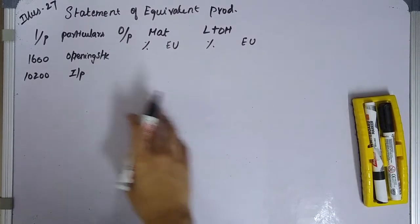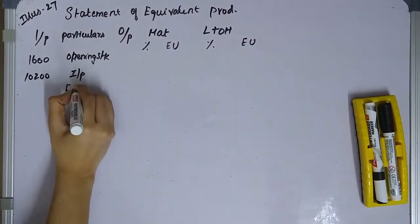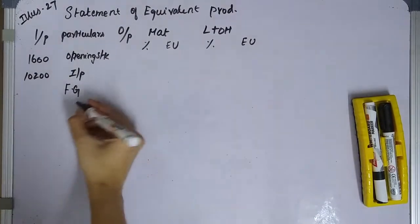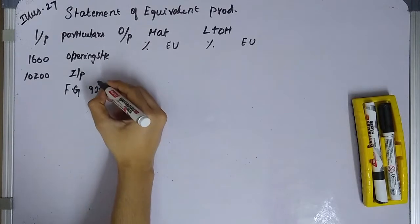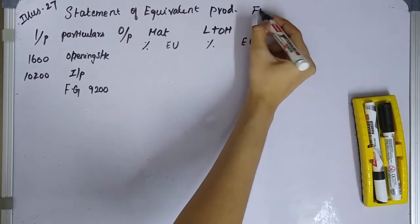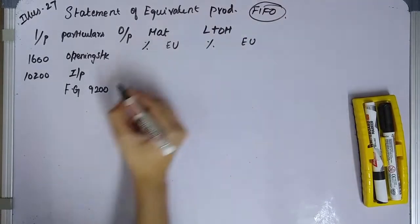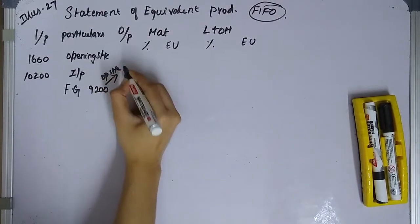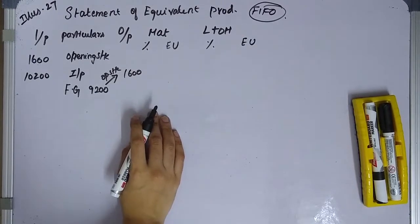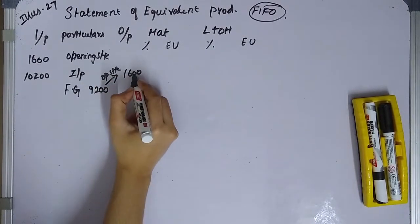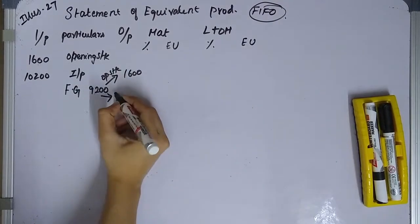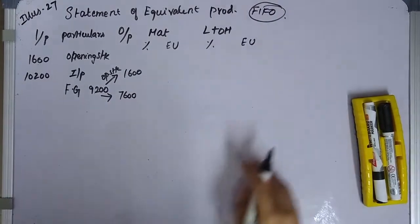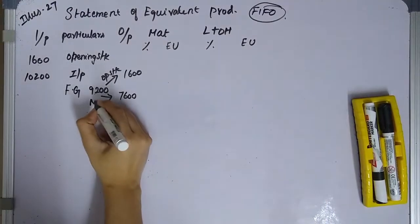On the output side, finished units transferred to the next process are 9,200. Of that, 1,600 relates to the opening stock from the previous year. The balance — new units completed — is 9,200 minus 1,600 equals 7,600 units. This 7,600 represents the new input completed this period.